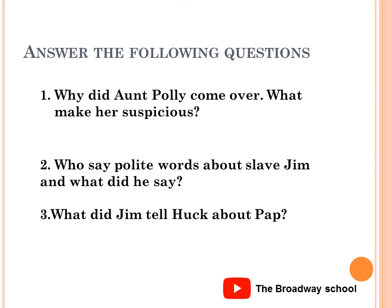Question number two: Who said polite words about slave Jim, and what did he say? The doctor said polite words about slave Jim. The doctor told Aunt Sally and Uncle that they should not be too rough with Jim. When he needed to cut out a bullet, Jim gave away his freedom for the boy, and the doctor said he had never seen a better nurse and that a slave like Jim is worth a thousand dollars and some kindness.